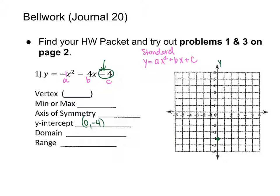I have one point on the graph, but I need three points to make a parabola — two points that reflect each other and one point in the middle which is the vertex. So let's go find the vertex. The downside of standard form is that you need a formula to figure out the vertex. The formula helps you get x first.